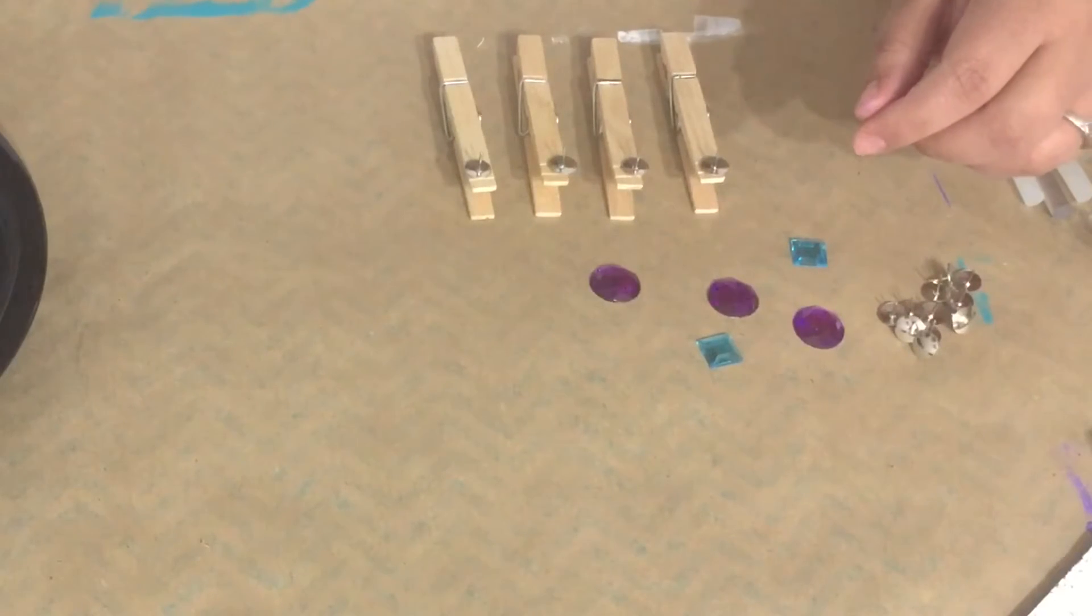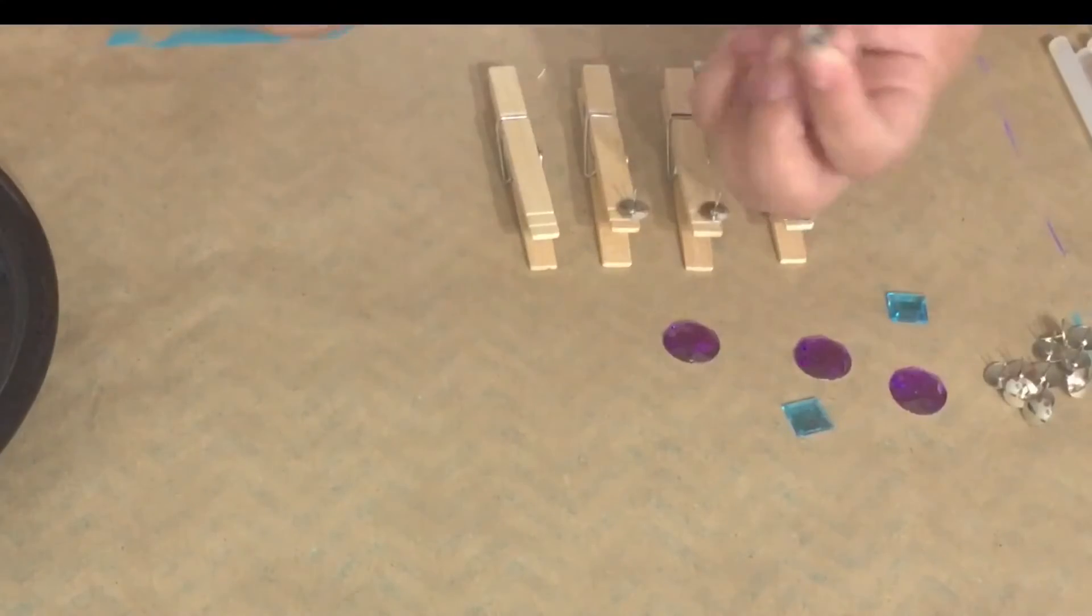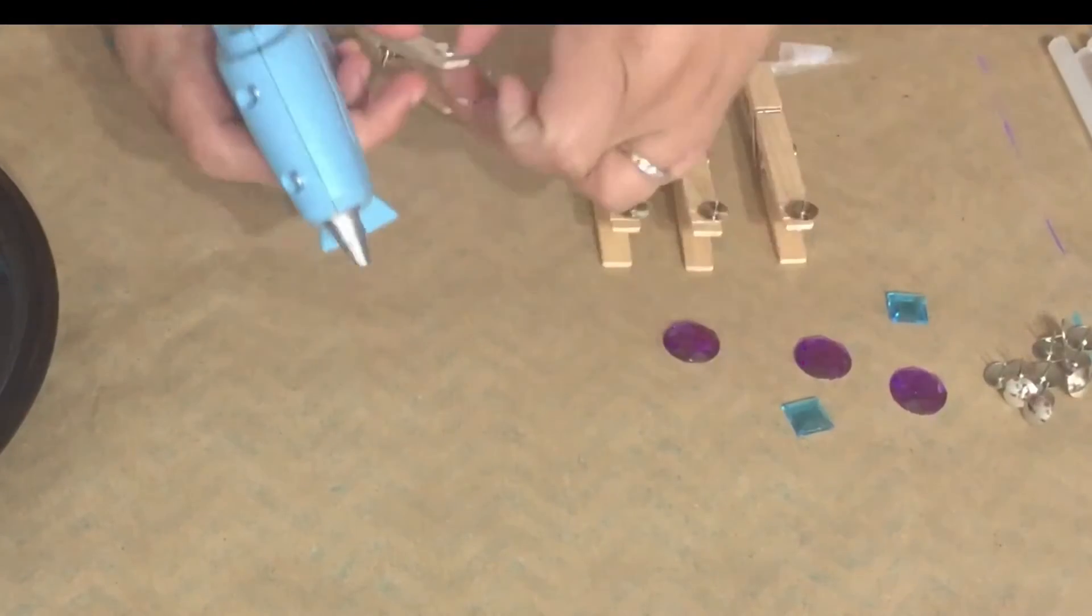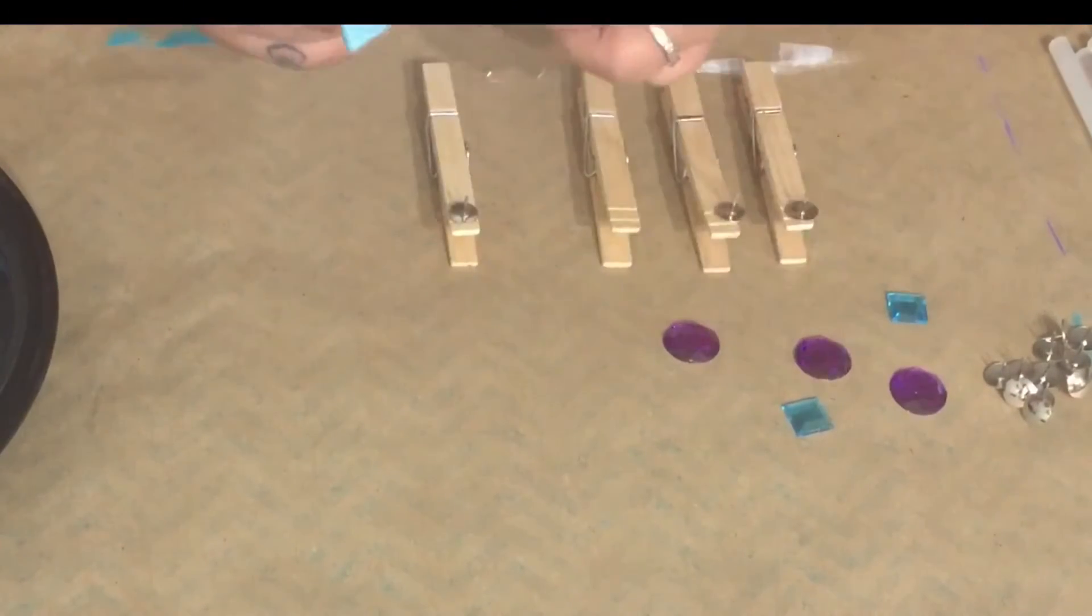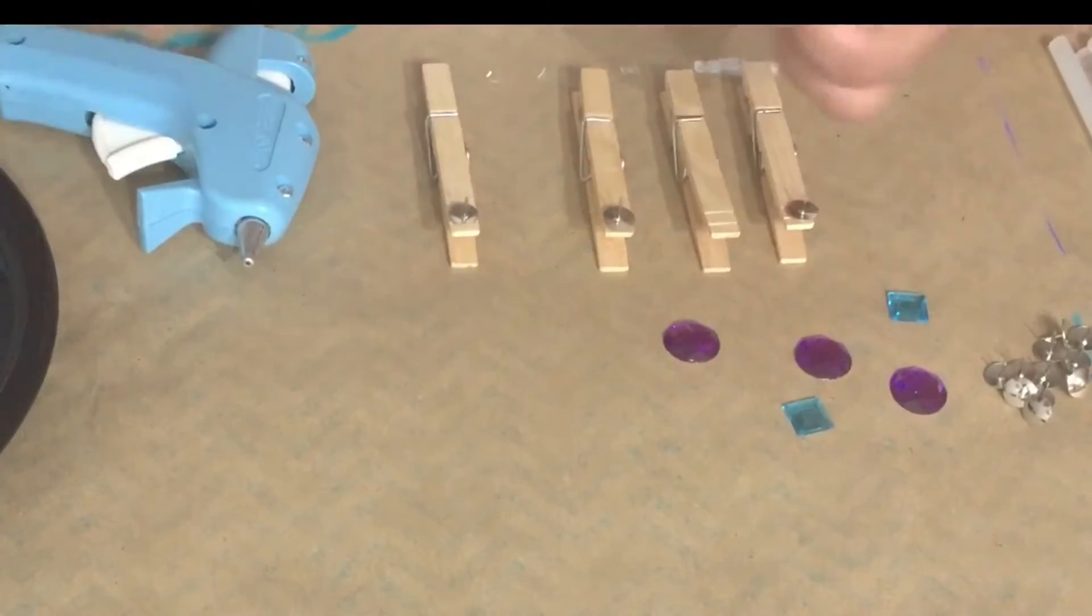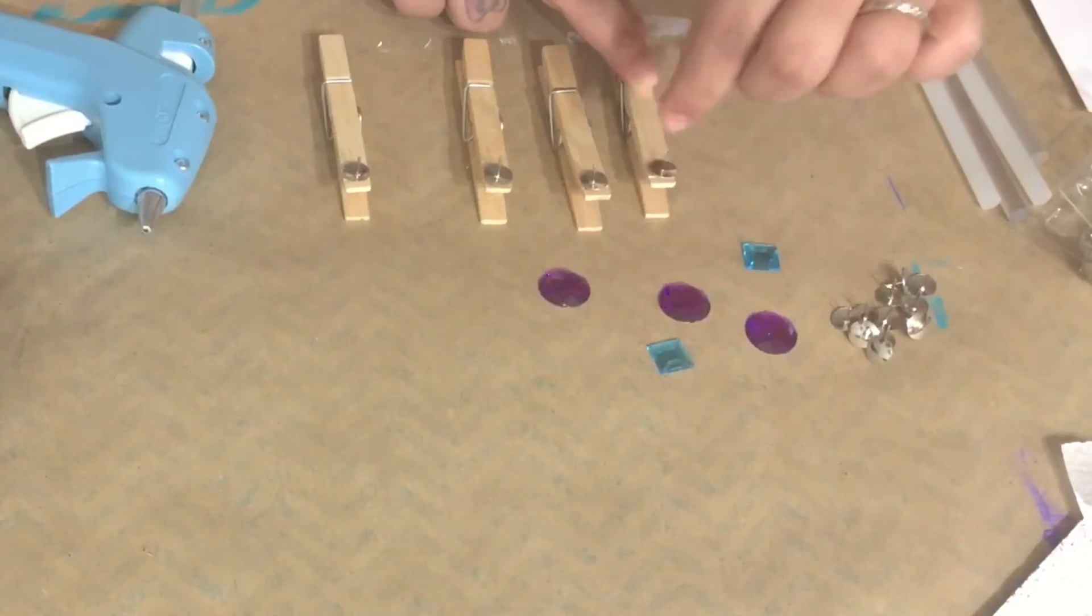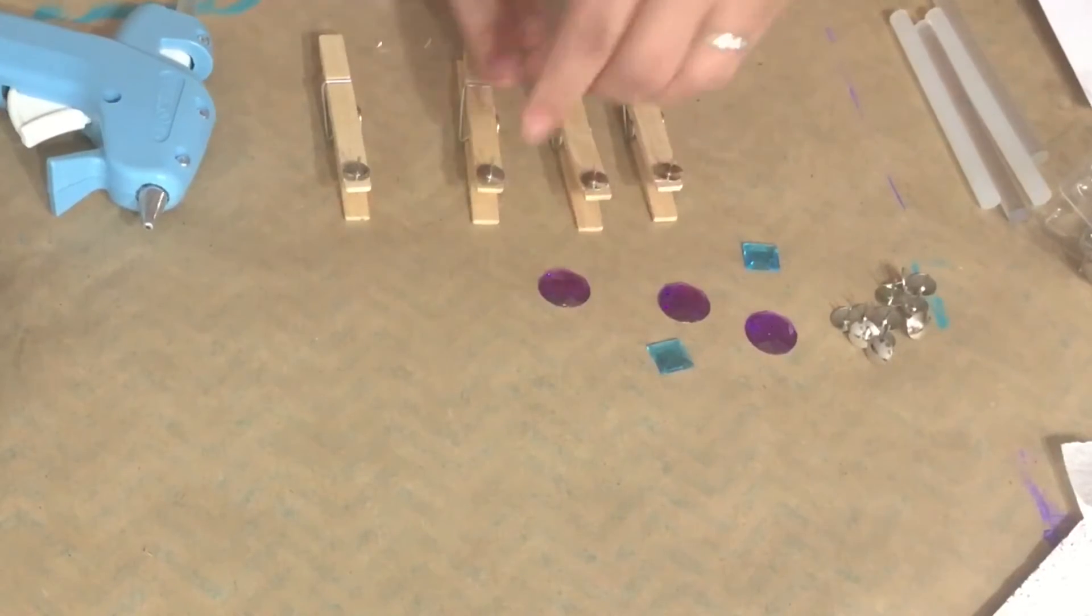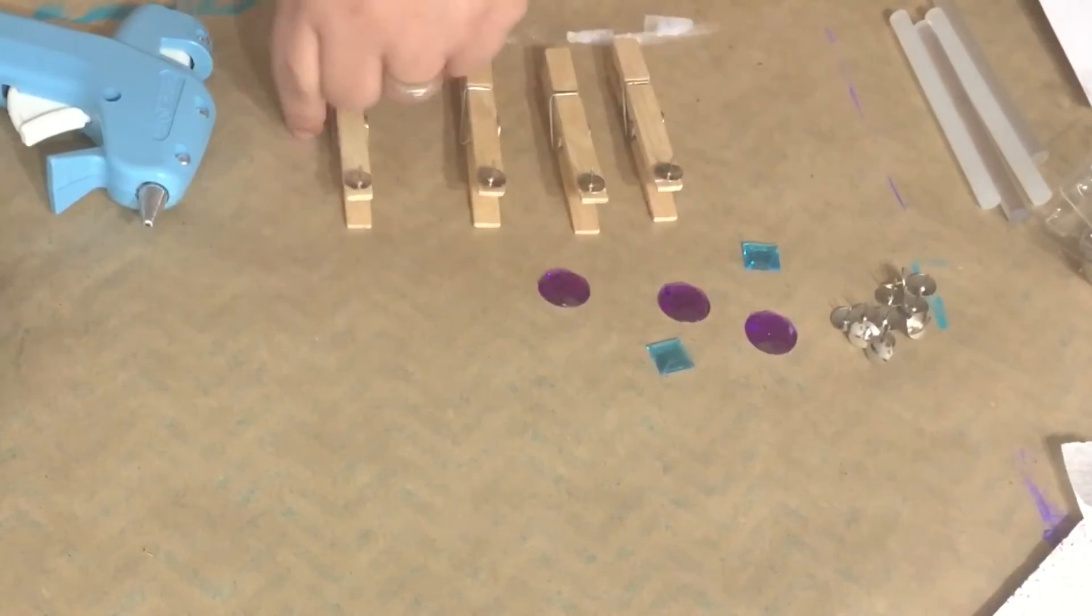I am placing the thumbtacks where I want them glued. I didn't realize I wasn't in frame for this portion of the video, but all you need to do is squeeze a dot of glue onto the thumbtack or the clothespin and press it down firmly to secure. Remove the strings of glue and you are done with your clothespins. You can also take it a step further if you like and paint them.